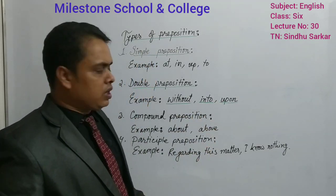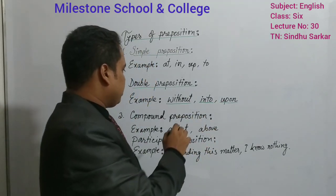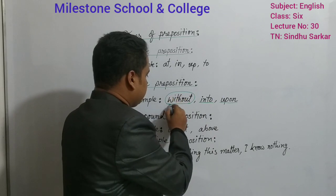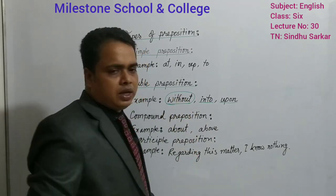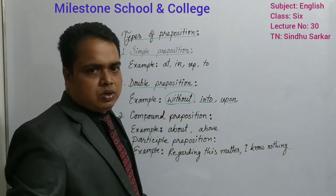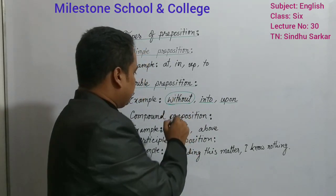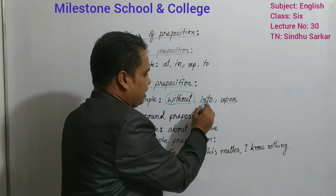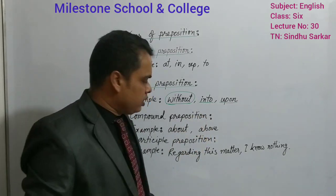Why is it called double preposition? Because within this preposition you are getting two prepositions. How? With plus out, in plus to, up plus on.